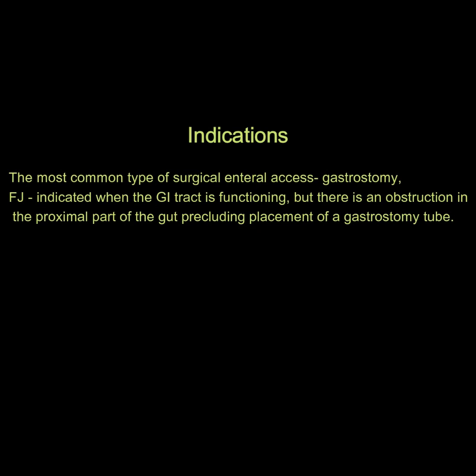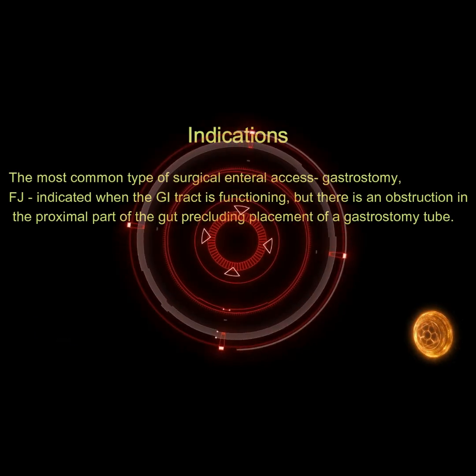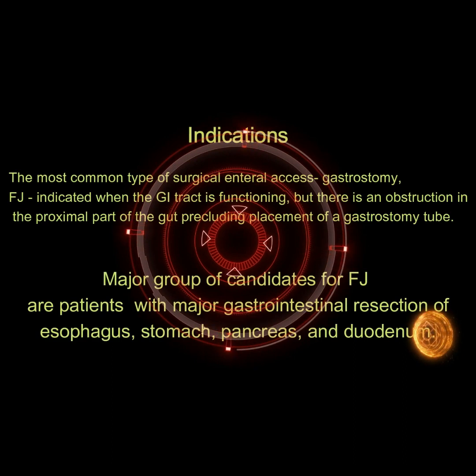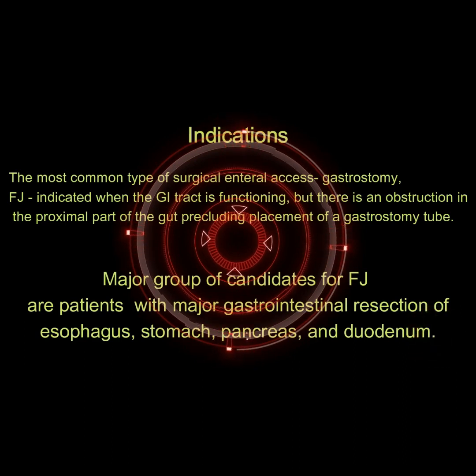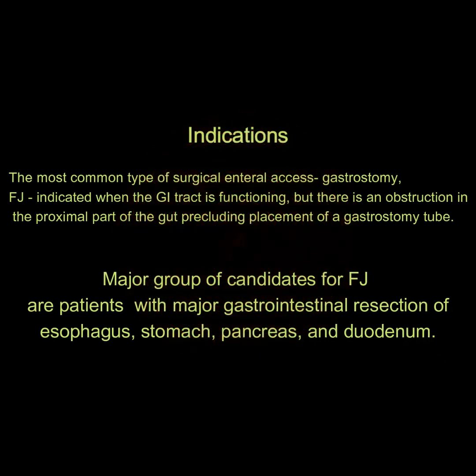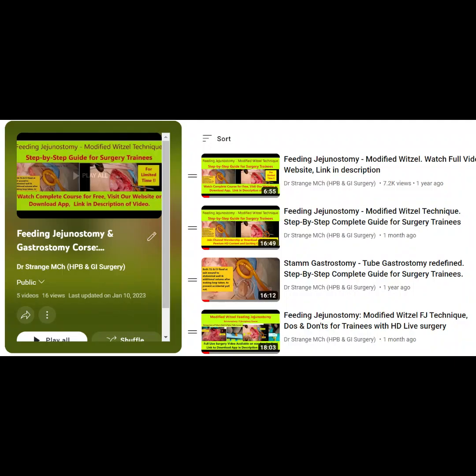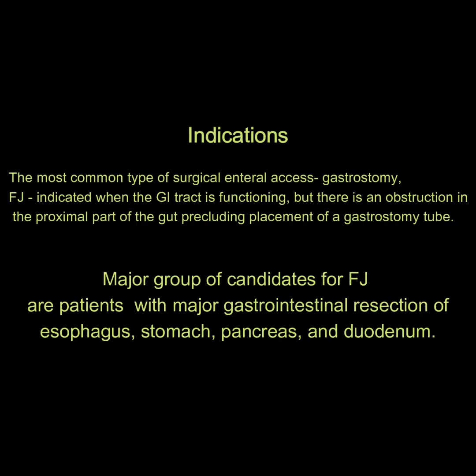The most common type of surgical enteral access is gastrostomy. FJ is indicated when the GI tract is functioning but there is an obstruction in the proximal part of the gut precluding placement of the gastrostomy tube, like gastric outlet obstruction, as in the present case.